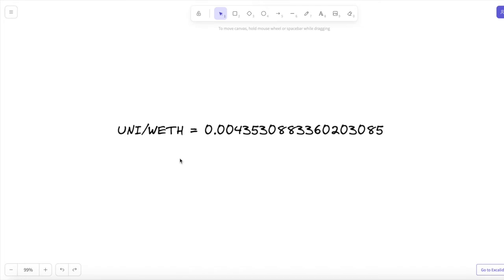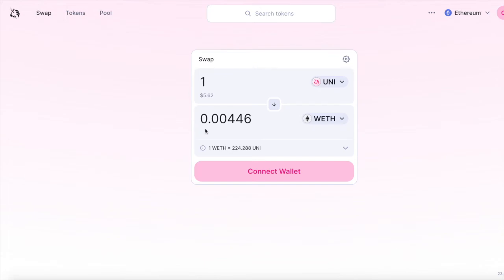If we jump over to the app now, remember this number, 0.004353, and we have 0.00446. It's slightly different now because I created the presentation a few days ago.